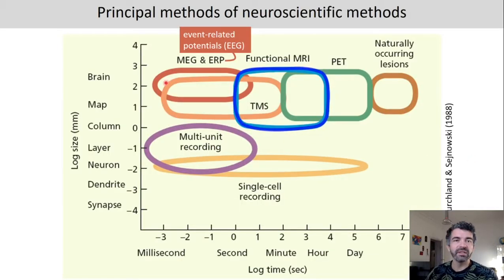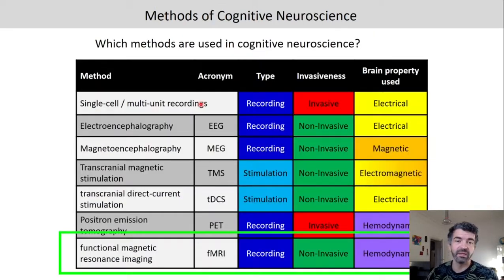If you recall last time we were talking about MEG and EEG which has a very high temporal resolution but bad spatial resolution. For fMRI it is quite the opposite. Here we have a high spatial resolution but bad temporal resolution. fMRI is a recording method. It is non-invasive and uses the hemodynamic properties of the brain.